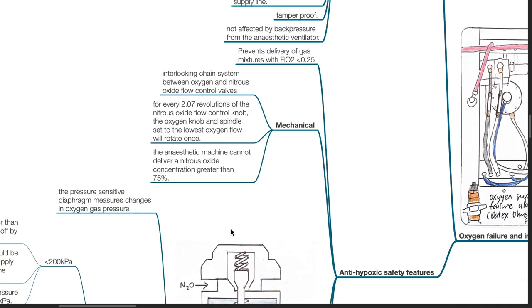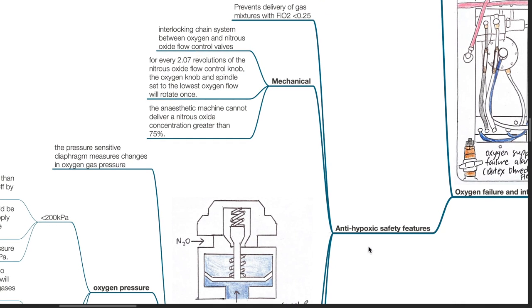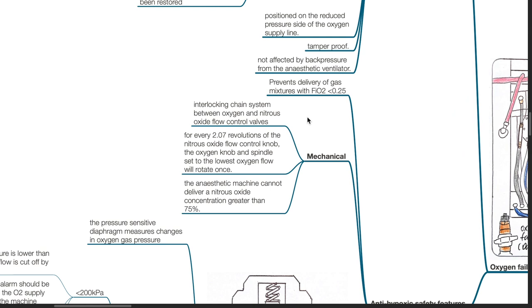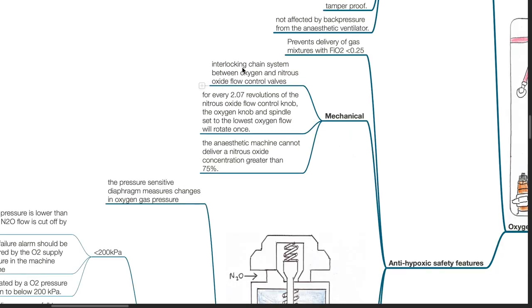Anti-hypoxic safety features prevent delivery of gas mixtures with FiO2 of less than 0.25. For mechanical systems, an interlocking chain system exists between oxygen and nitrous oxide flow control valves. For every 2.07 revolutions of the nitrous oxide flow control knob, the oxygen knob and spindle set to the lowest oxygen flow will rotate once. The anesthetic machine cannot deliver a nitrous oxide concentration greater than 75%.